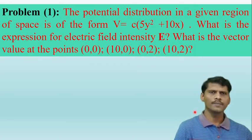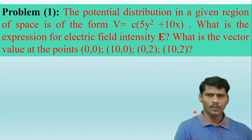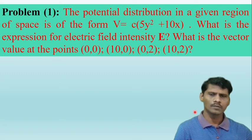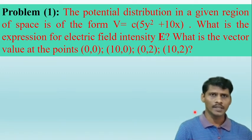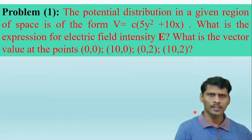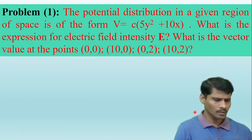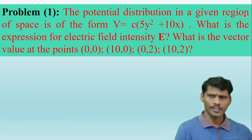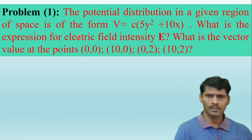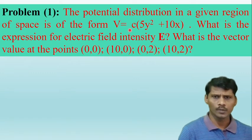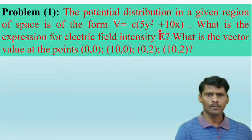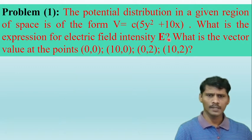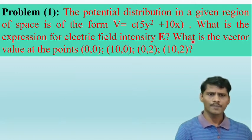In this video we are going to discuss the relationship between electric field intensity and electric potential with related examples. The first example: the potential distribution in a given region of space is of the form V = c(5y² + 10x). What is the expression for the electric field intensity?